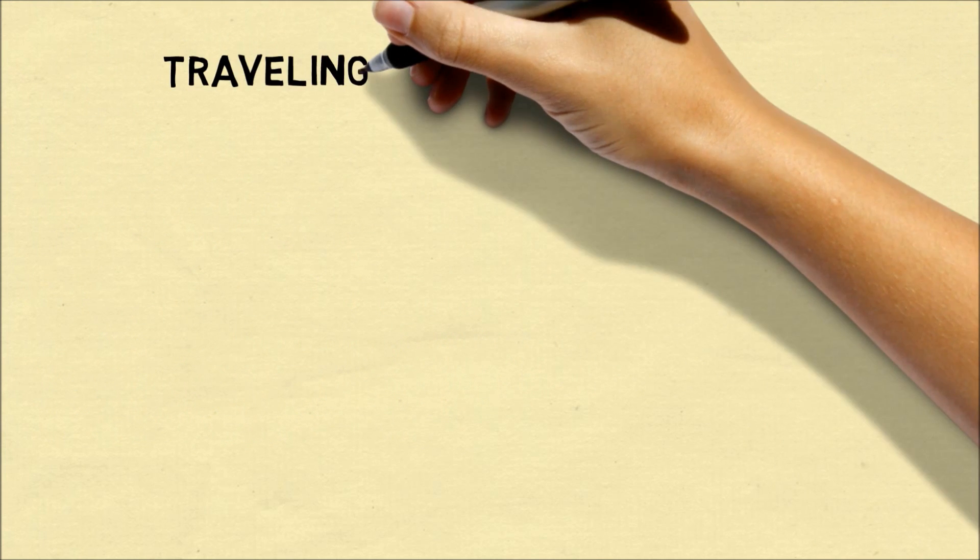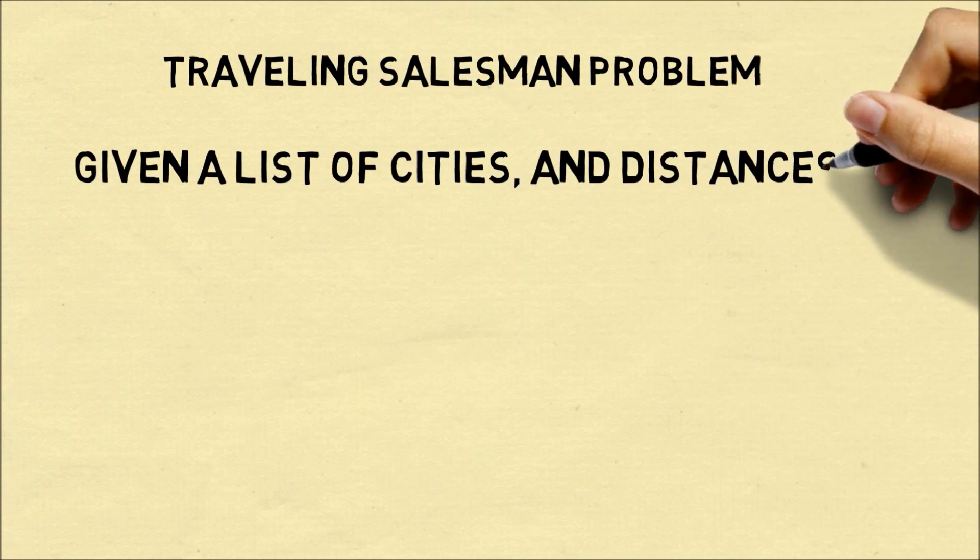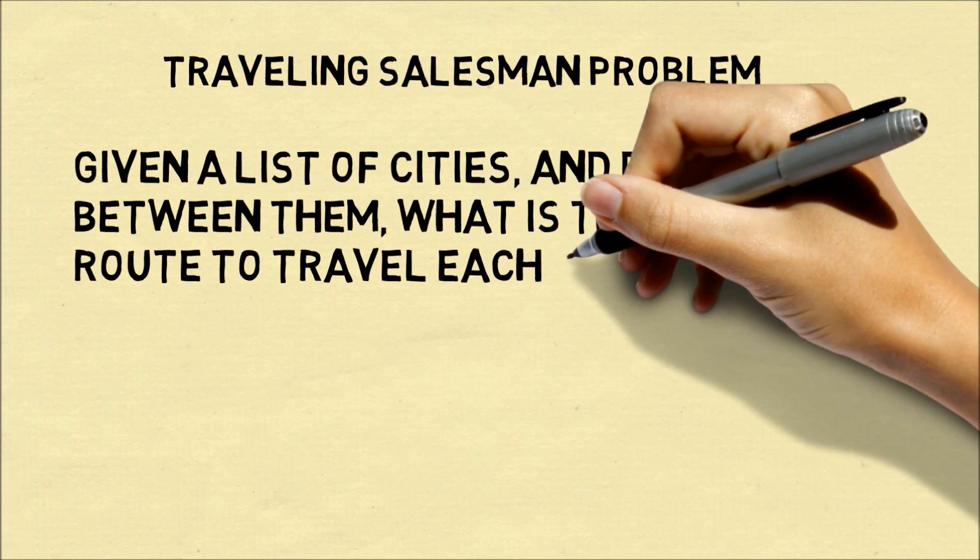The traveling salesman problem asks, given a list of cities and distances between the cities, what's the shortest route that travels each of the cities exactly once?